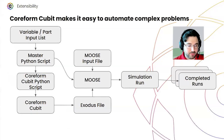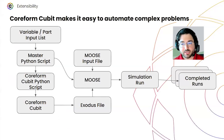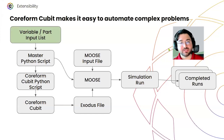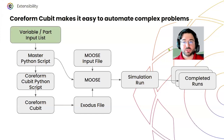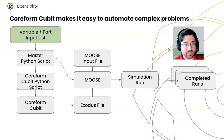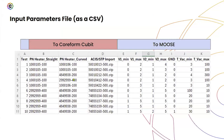I want to talk briefly about automating some of these complex problems. As I mentioned earlier, we do a lot of part sweeping and variable sweeping — depending on whether the heater length is different, the clamps are thicker, or different voltages are applied and different conditions apply. I manage these in a table that has all these different parameters together.